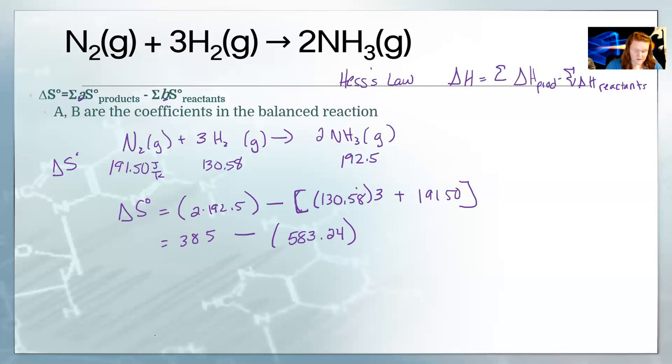And so 130.58 times three plus 191.5 gives us 583.24. Two times 192.5 is actually 385. So we got 385 minus 583.24. And you're going to see we're going to get a negative number. And that's what I meant by be careful of your sign. People always want everything to be a positive number, but it isn't. In this case, it's not.